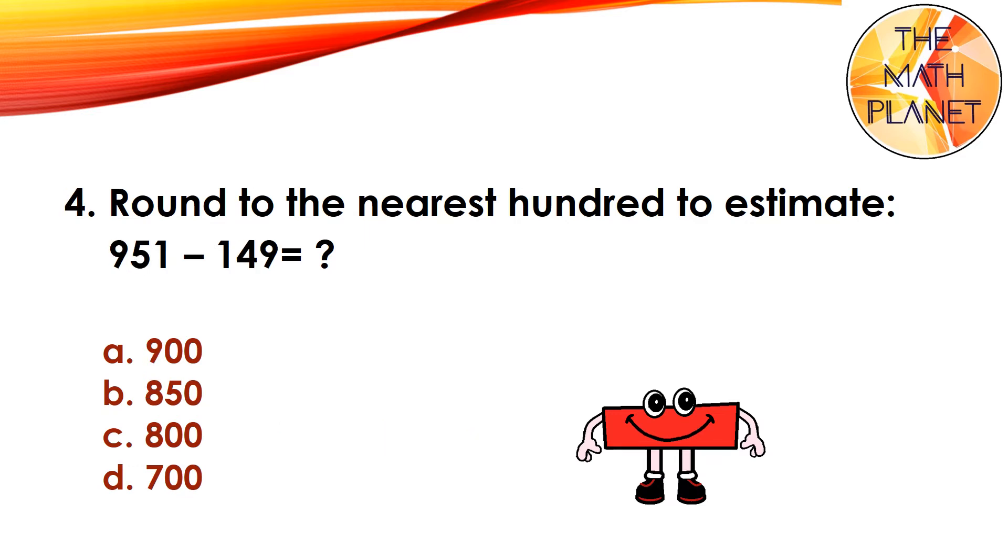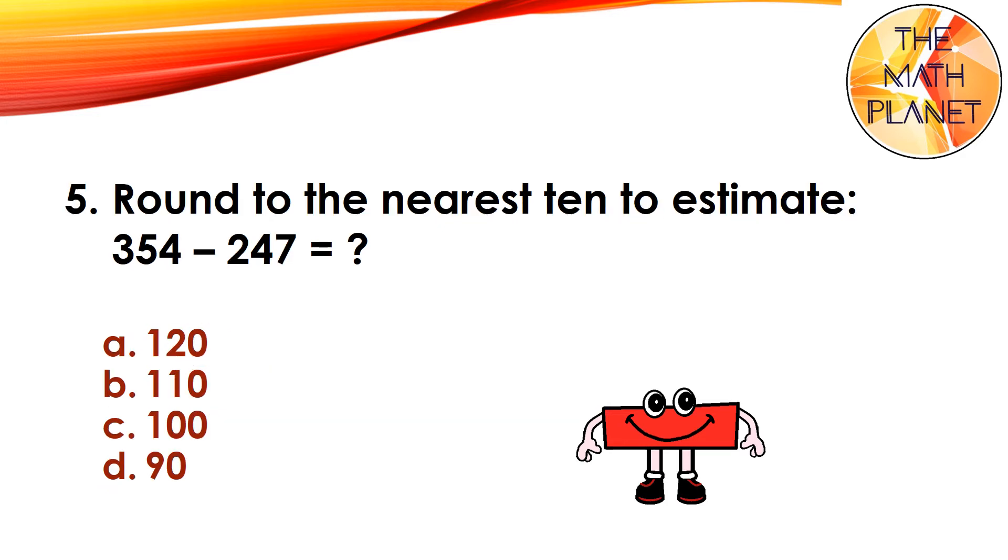Question 4. Round to the nearest hundred to estimate 951 minus 149. The correct answer is A because 1000 minus 100 equals 900.